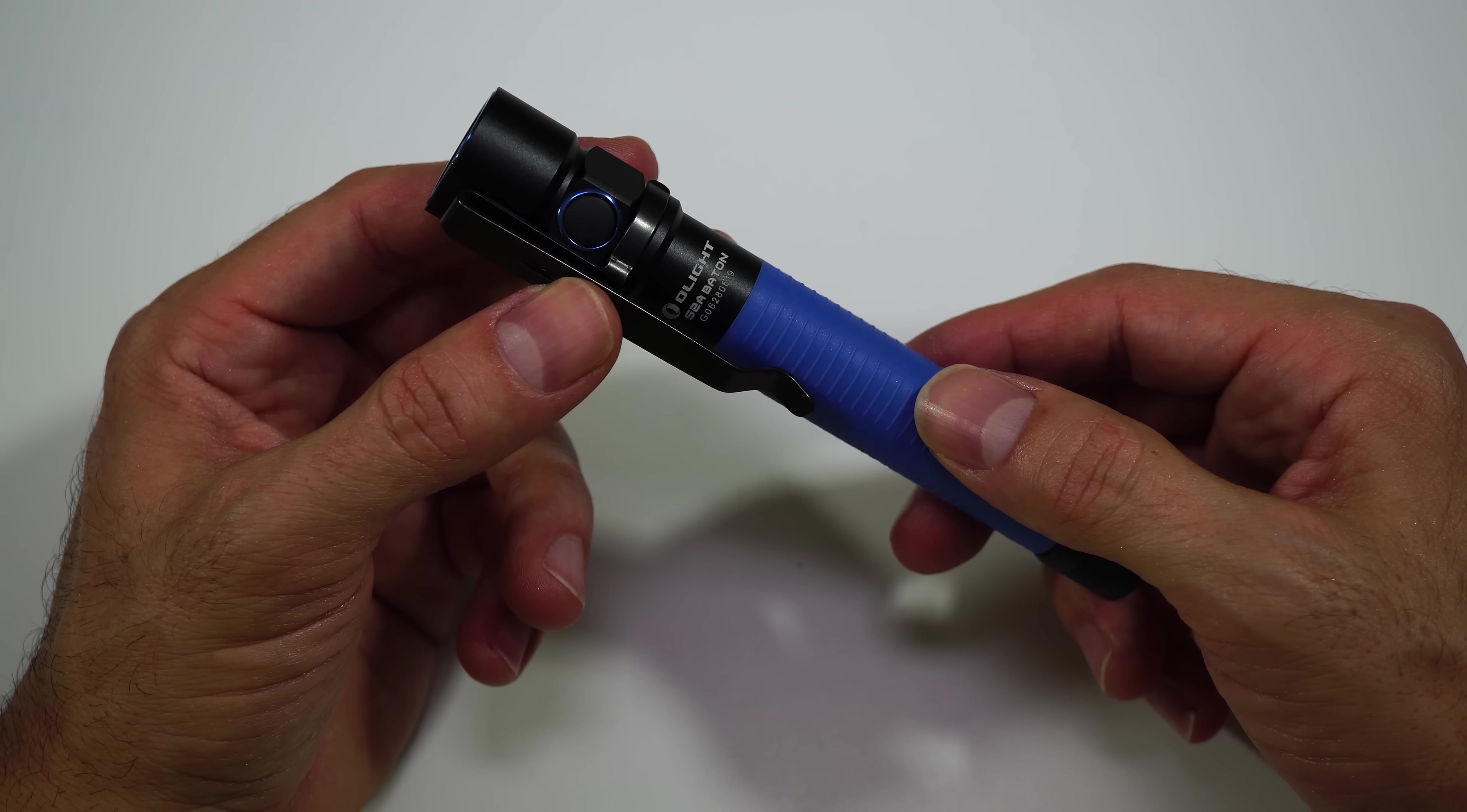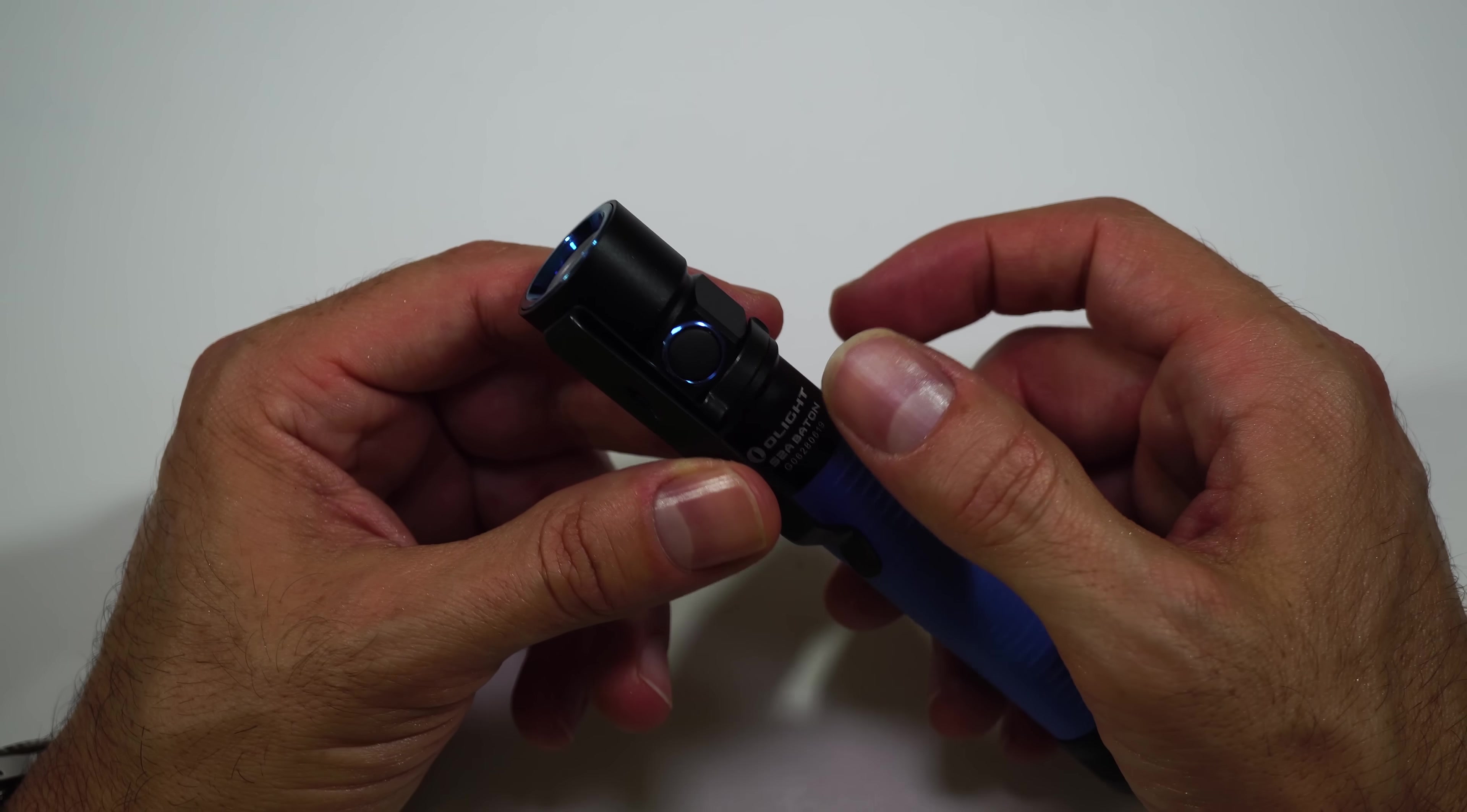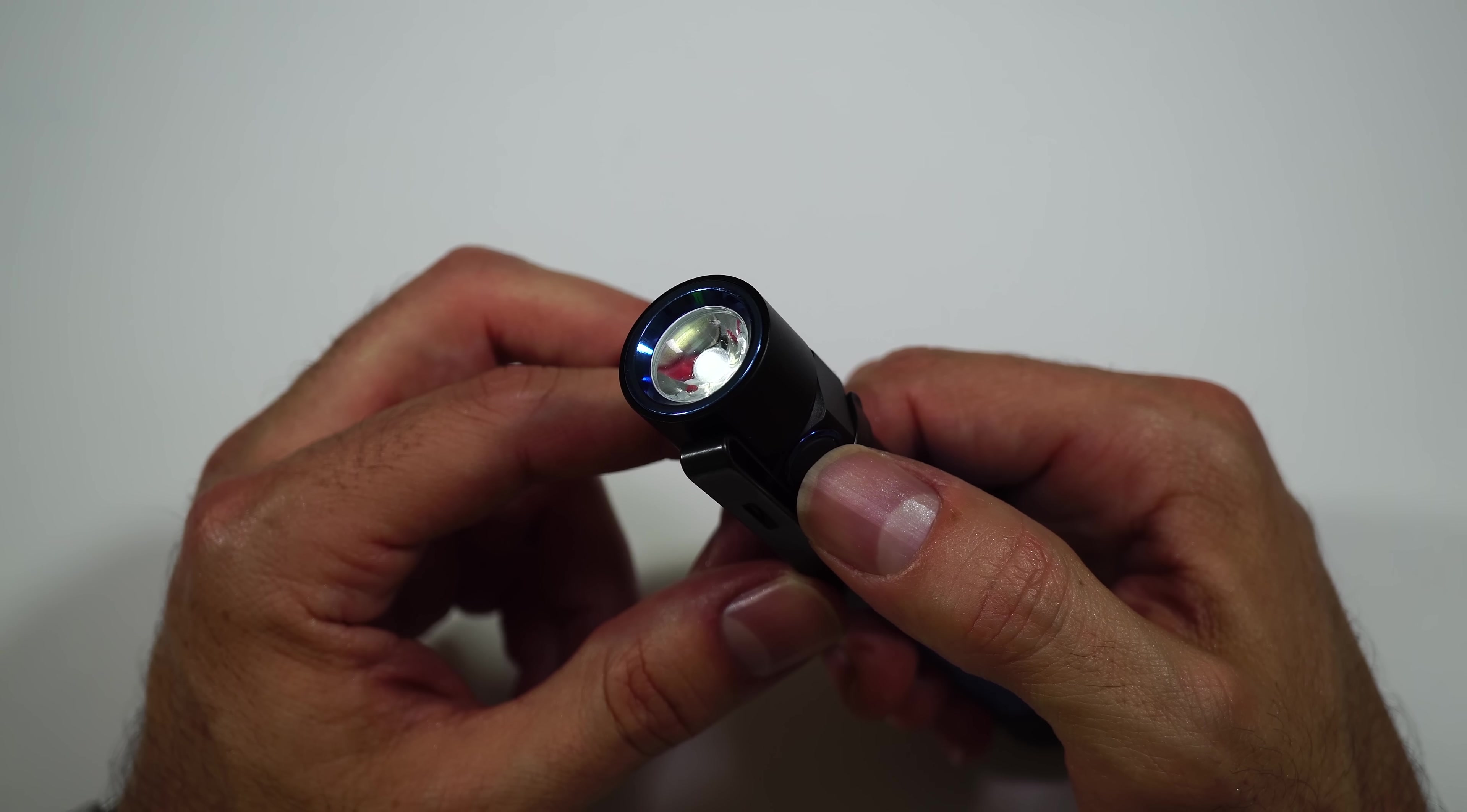Onto the user interface. The light will go from 0.5 lumens up to 550 lumens. That 0.5 lumens, the moonlight mode, you get to that by long pressing on the button, and that goes into the moonlight mode, 0.5 lumens for 100 days.